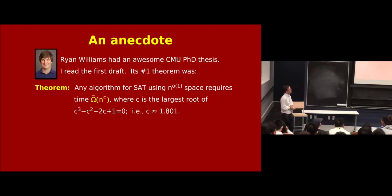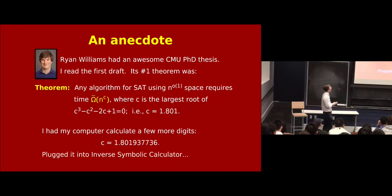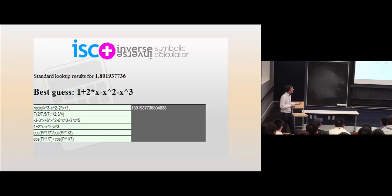And yeah, cool theorem. So he sent me a copy of this thesis and I was reading it and I was like, huh. And so I had my computer calculate some more digits. And then I was like, I wonder what happens if you plug this into inverse symbolic calculator and you do. And it tells you, hey, it's the root of 1 plus 2x minus x squared minus x cubed. And I was like, yeah, I knew that. But if you look carefully down here, you'll also see that it's cos pi over 7 plus cos pi over 7. Also known as 2 cos pi over 7.